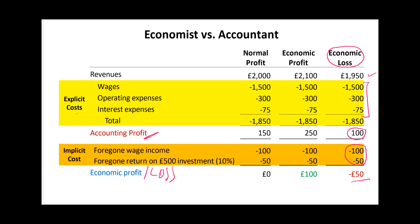It looks like the business is making a positive accounting profit, so the business owner could stay in the business based on an accountant's perspective. But that amount is less than what they earned before — £150 — which is now forgone. Earning an economic loss doesn't mean no profit; it simply means that the accounting profit is not sufficient to cover what has been given up to earn it. To earn £100 per year, this person has given up £150 in earnings. So the business is not profitable from an economist's point of view, but is profitable from an accountant's point of view.